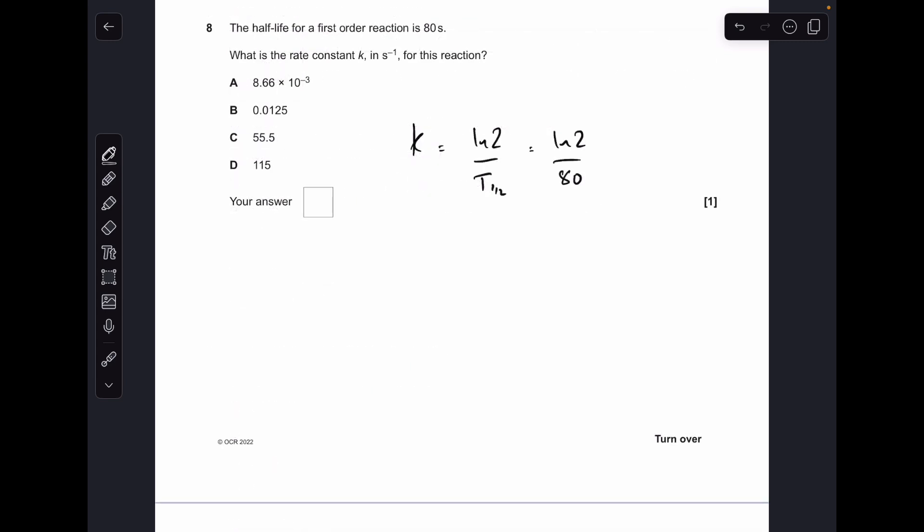Number 8 is using a formula that's very rarely used. The rate constant for a first order reaction can be calculated by doing ln 2 divided by the half-life. That would be ln 2 over 80, which comes out at 8.66 × 10⁻³. The answer was A.